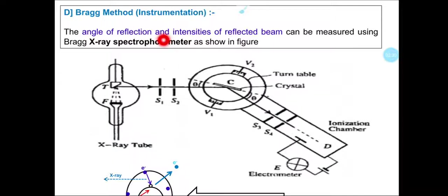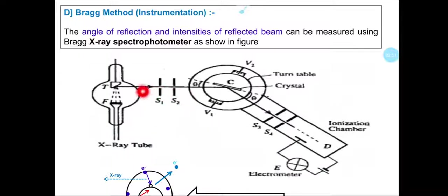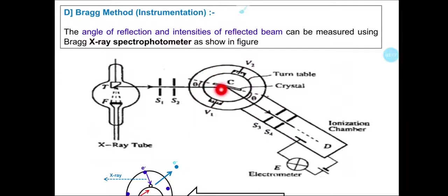In short, we can analyze the lattice or crystal. The angle of reflection and intensity of the reflected beam can be measured using Bragg's X-ray spectrophotometer. The schematic diagram of Bragg's spectrometer is as shown in the figure. The X-ray tube generates X-rays, which propagate through slits S1 and S2 toward the movable table, also called a goniometer, on which a single crystal is mounted.